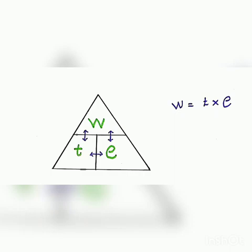Everything is necessary to make the time, effort, efficiency, produce, output, work. It depends on our three relationships. I'm going to talk to you about work, time, and efficiency.